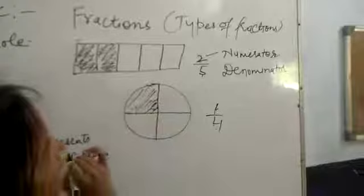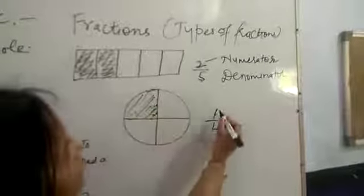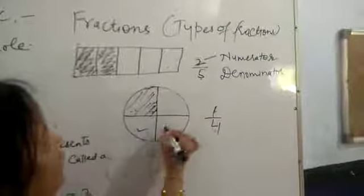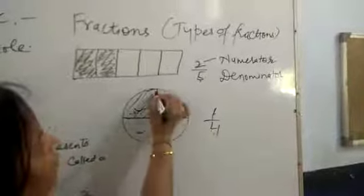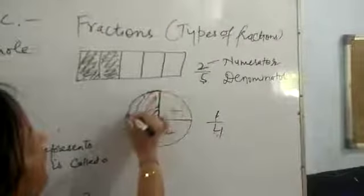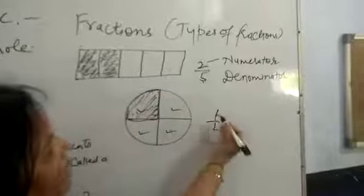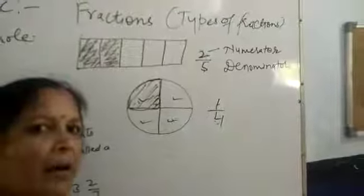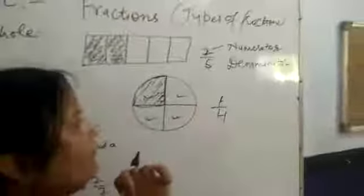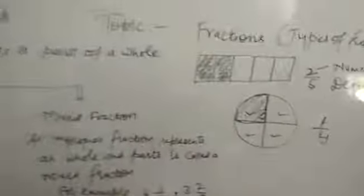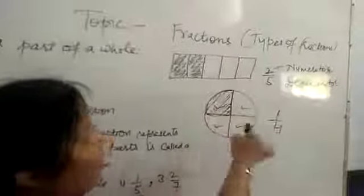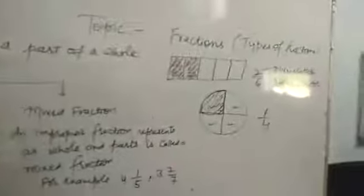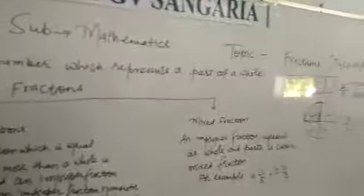Similarly, 1 part of that pizza is 1 fourth. Out of the total parts of this complete whole — 1, 2, 3, 4 — out of 4, if you get 1 piece, then that is 1 fourth of the complete pizza. That pizza is itself a whole object. Fraction is a number which represents a part of a whole.